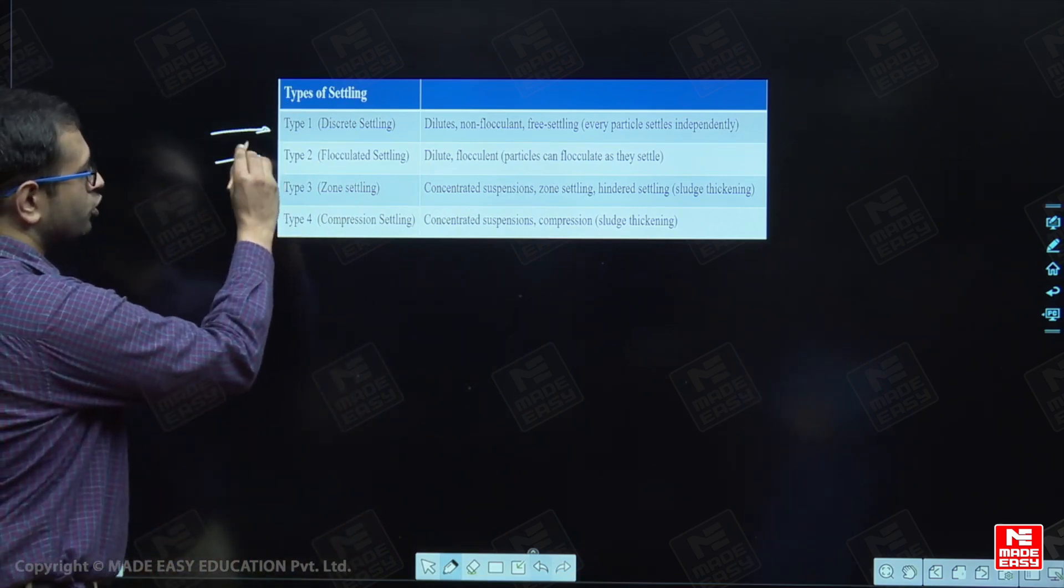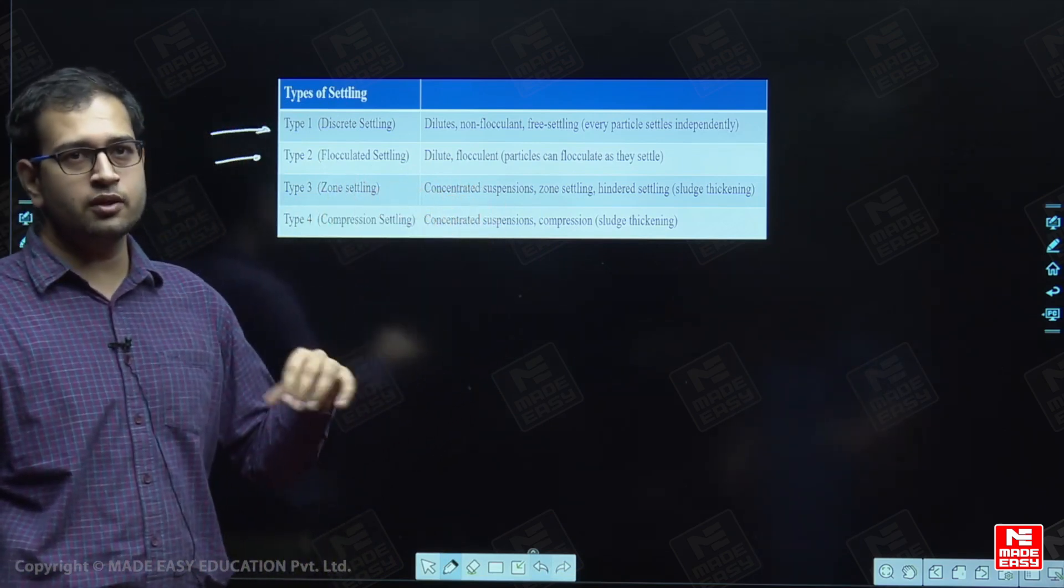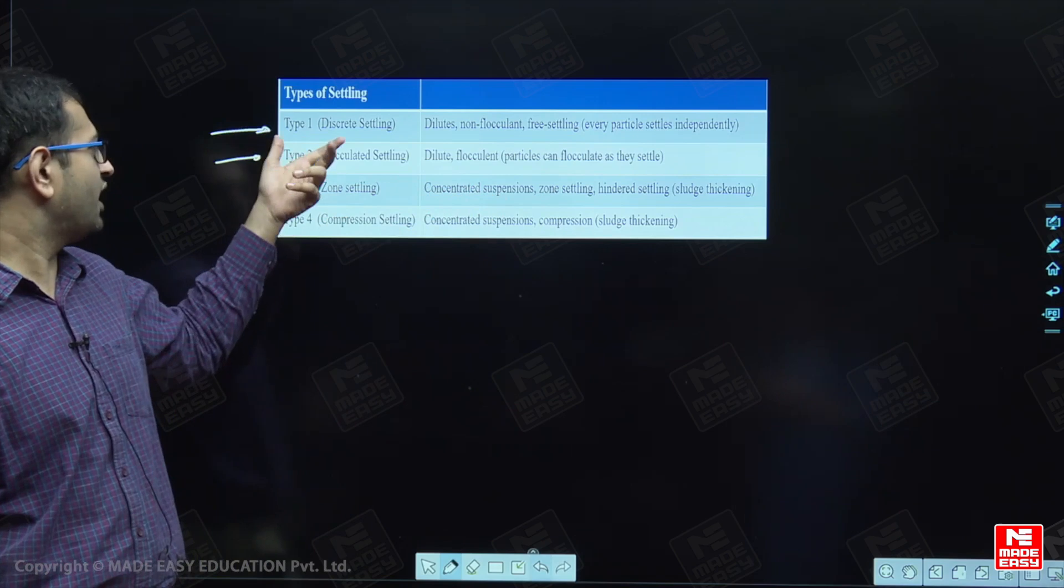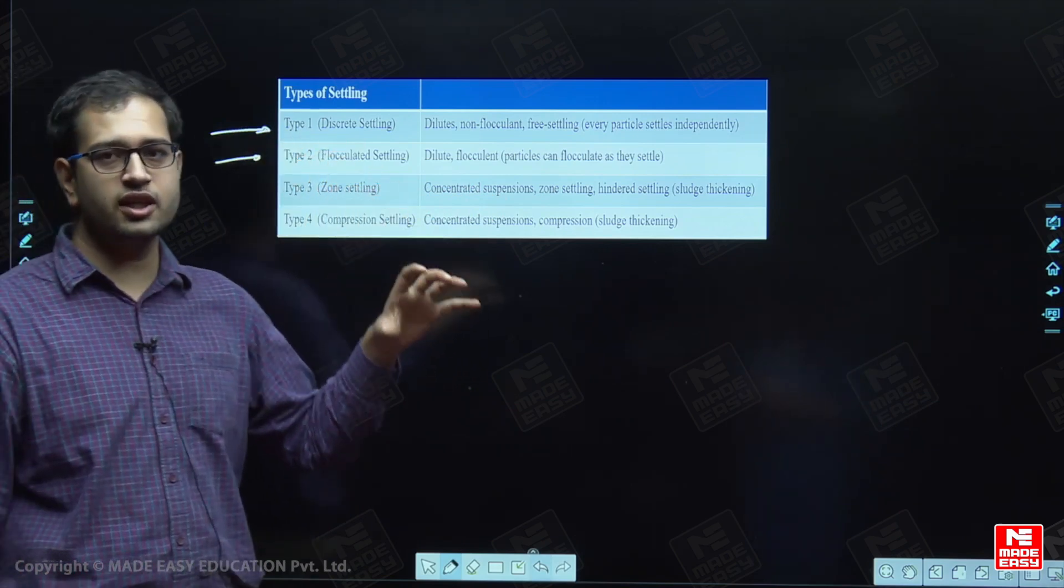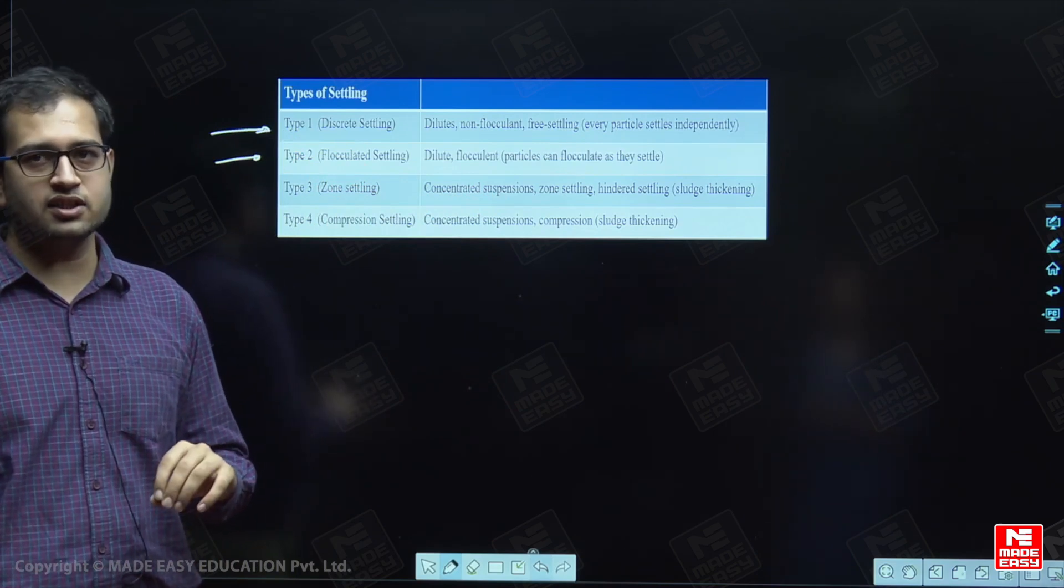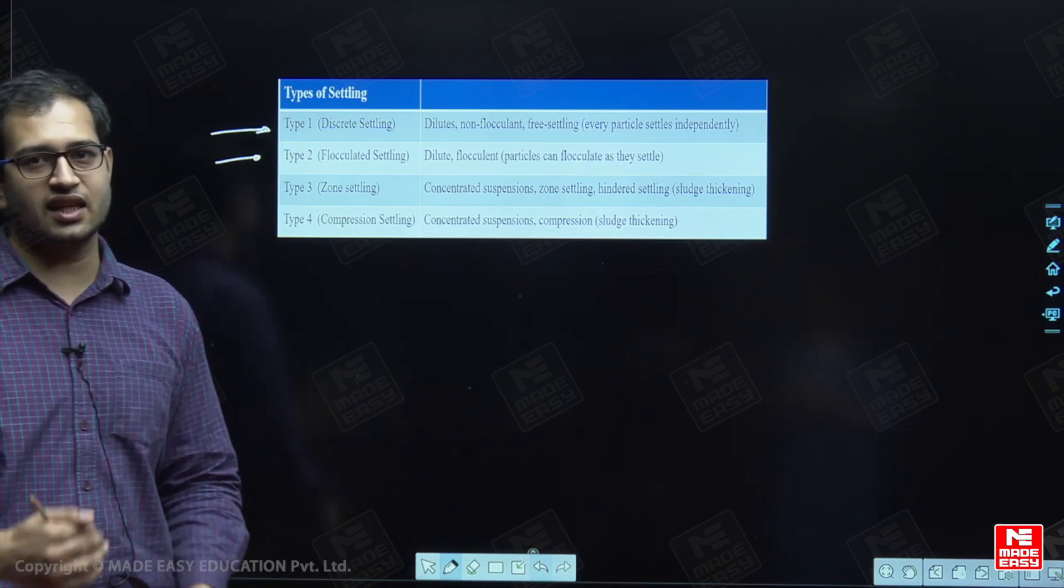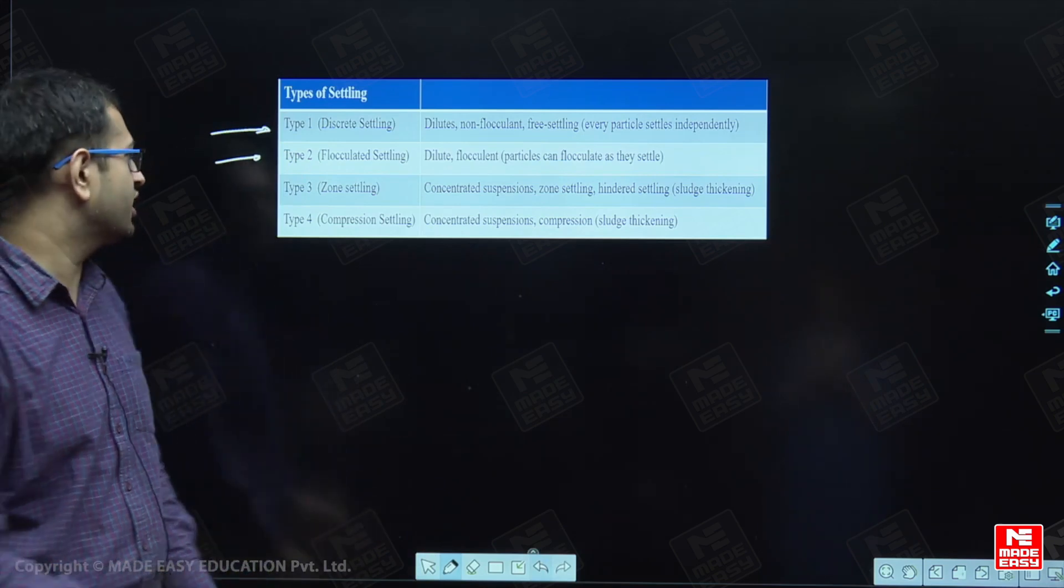Then there is type 2 settling, also known as flocculated settling. This happens when the concentration is a little higher than the type 1 concentration. Here as the particle settles, they get flocculated with the particles already present and hence when the particle settles, their size increases, increasing their velocity as well.